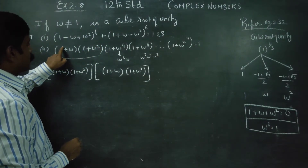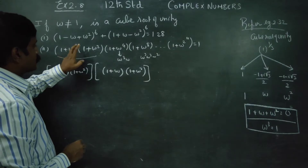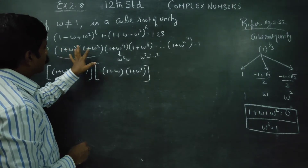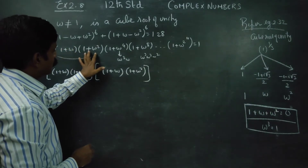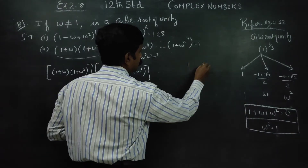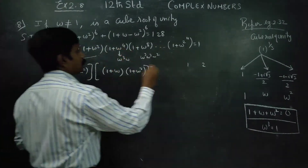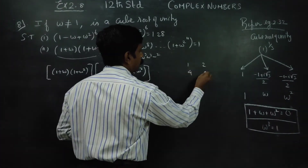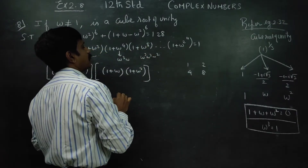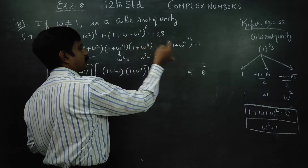The expression has pairs. The first pair is (1 plus omega) and (1 plus omega squared). The powers involved are power 1, power 2, power 4, and power 8. We use these reduced values to simplify each factor.